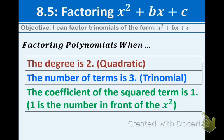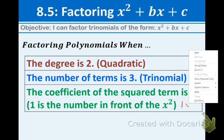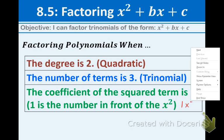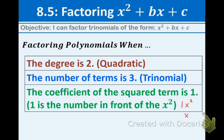This must be true in order to use this method. First thing, the degree must be two. It's called a quadratic. The number of terms must be three. It's called a trinomial. We talked about what those words mean in section 8.1, the very first section of this chapter. Last thing that must be true, the coefficient of the squared term is one, a.k.a. the one is the number in front of the x squared. So you can use this method when all of these factors are satisfied.